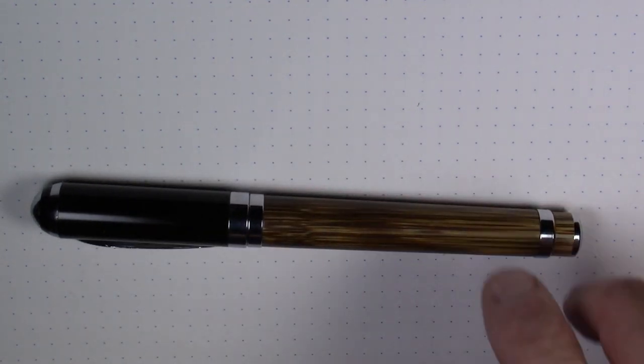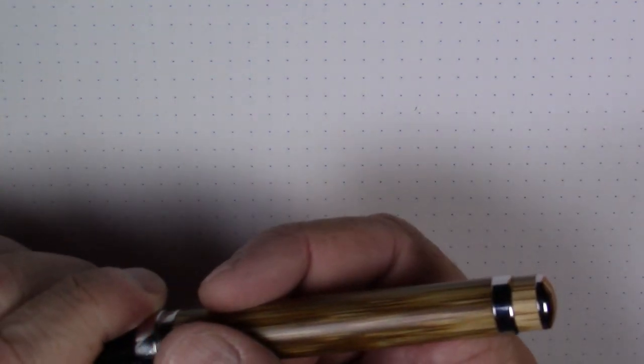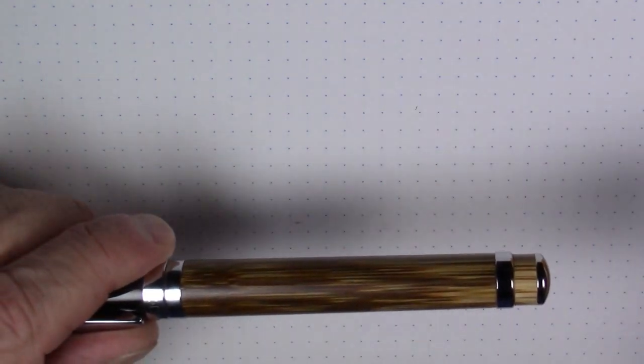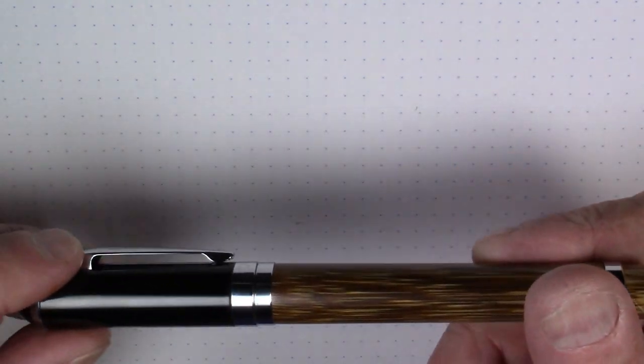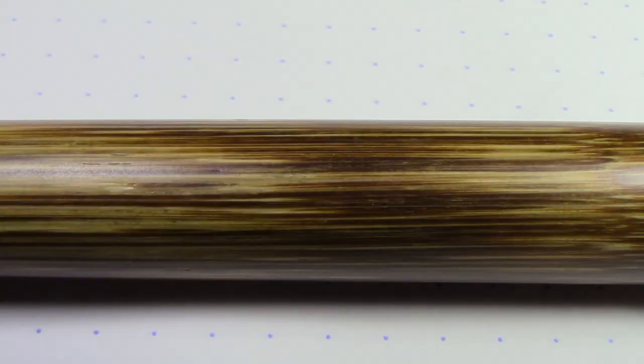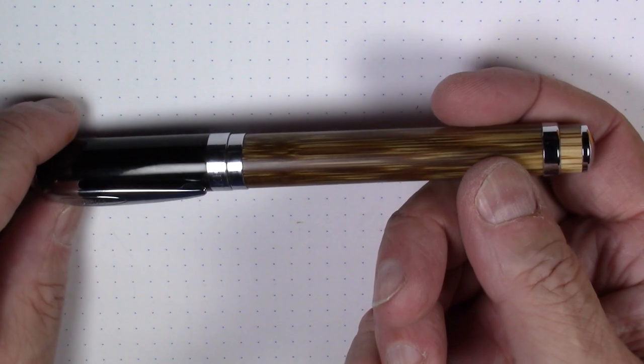The body of this pen is made out of bamboo. It's a solid piece of bamboo. What they do is take a stick of bamboo, drill it out and hollow it out in the center and stick the guts of the pen through that. So this is real wood, real bamboo, polished and finished. It's actually quite smooth and feels quite good in the hand.